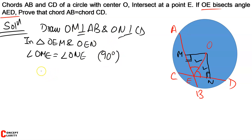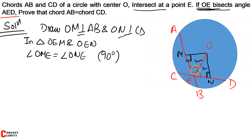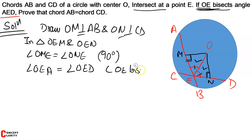After this, it is given that OE bisects angle AED. As I already told you, when a line bisects an angle, it divides the angle into two equal parts. So angle OEA is equal to angle OED — because it is given that OE bisects. You can write 'given' for complete reference.